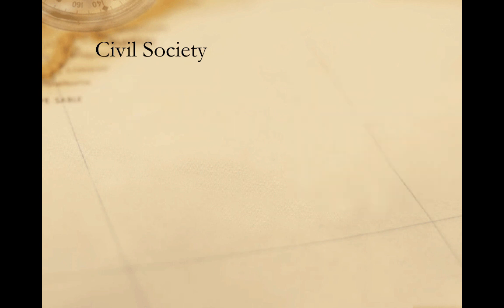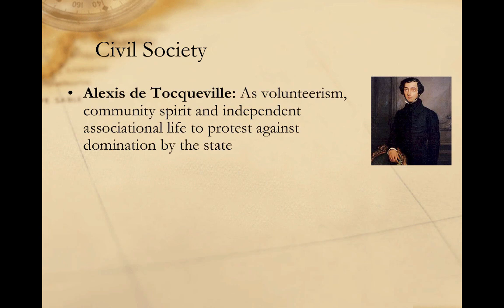Depending upon how we think about civil society, we can arrive at competing interpretations of its impact and importance. Writing in the aftermath of the American Revolution, Alexis de Tocqueville viewed civil society as the realm of volunteerism and community spirit. He viewed this realm as central to American identity and a root cause and protector of American democracy. De Tocqueville focused on the associational aspects of civil society and saw it primarily for its civilizing qualities — its importance in developing a shared sense of identity and belonging that provided the foundation for democratic life.